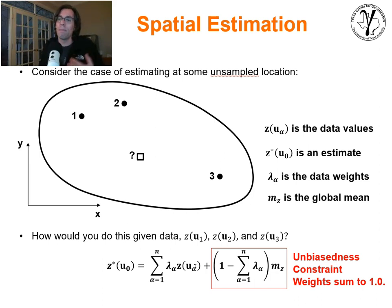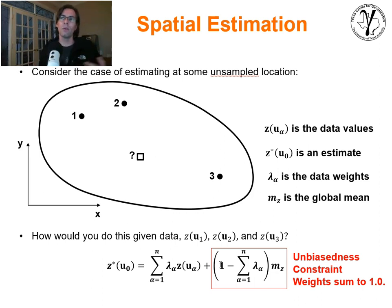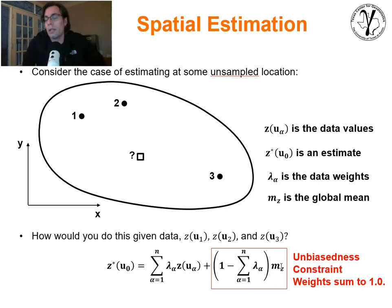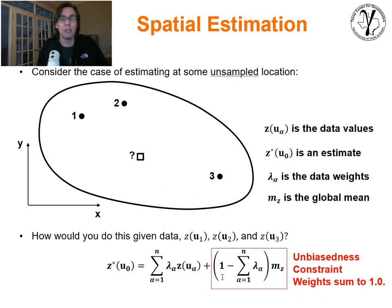We could be concerned about bias. If the sum of the weights is less than or greater than 1, we'd be adding bias. To account for that, we take 1 minus the sum of the weights and put that weight on the global mean. This provides unbiasedness. You could also imagine a circumstance where the data isn't useful for the unknown location — the sum of weights would be very low and the remaining weight would go on the global mean.